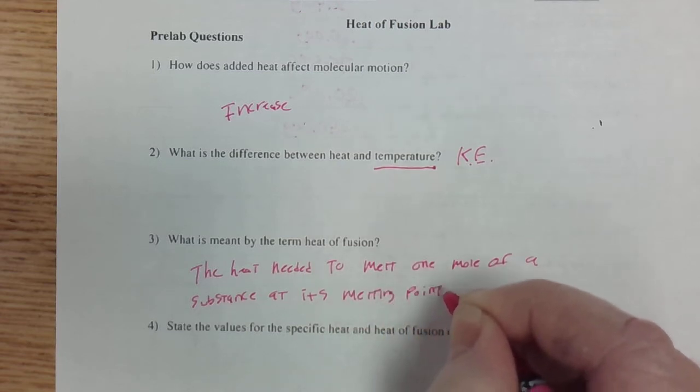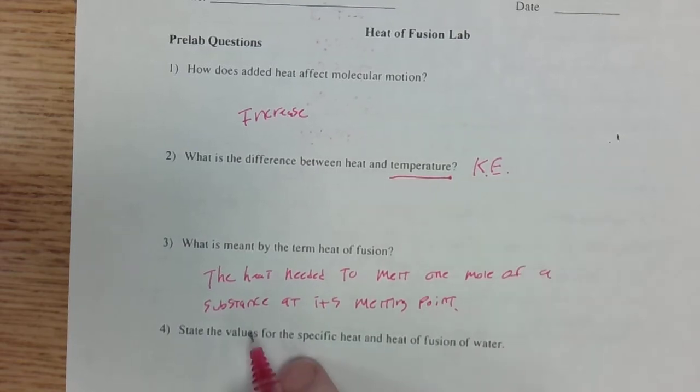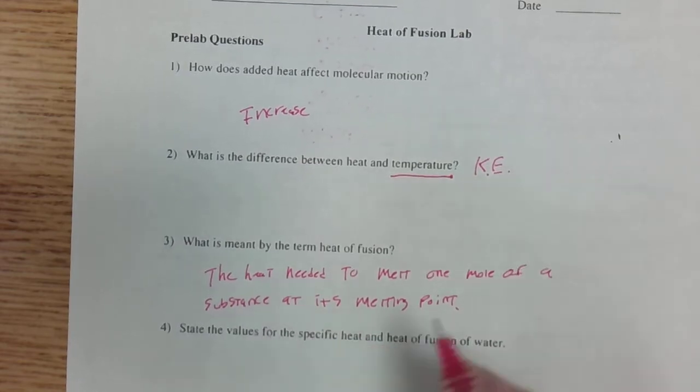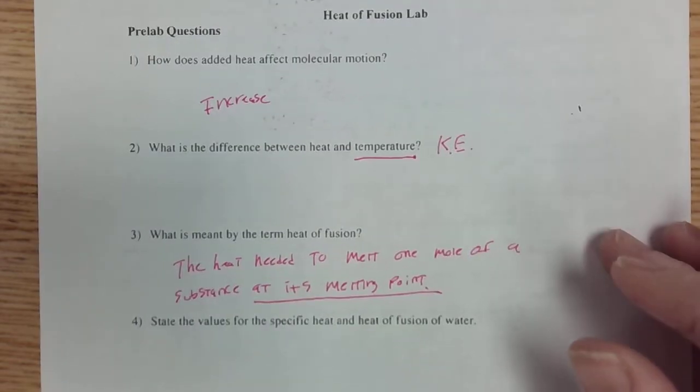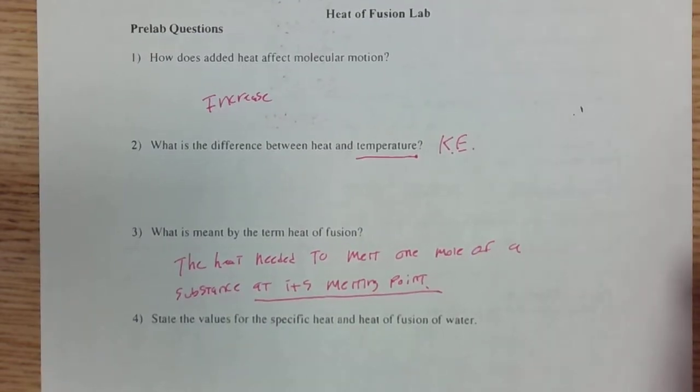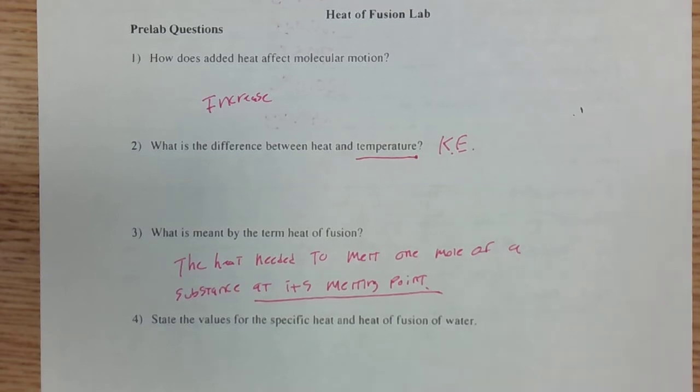Now I need to make a big deal about this. The reason I add this afterthought at its melting point is because I don't want there to be a need for any heat to raise the temperature of the substance to get it up to the point where it's going to melt. It has to already be at its melting point.